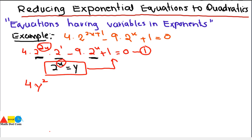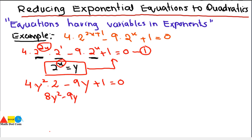So we write 4y²·2, where 2 stays as it is since there is no variable in the exponent, minus 9·2^x replaced by y, plus 1 equals 0. Simplifying: 4·2 = 8, giving us 8y² − 9y + 1 = 0.